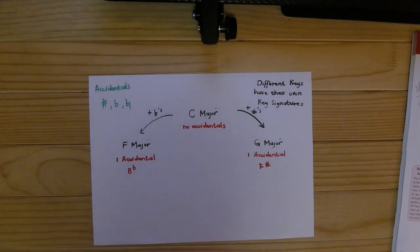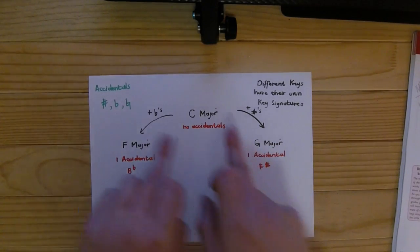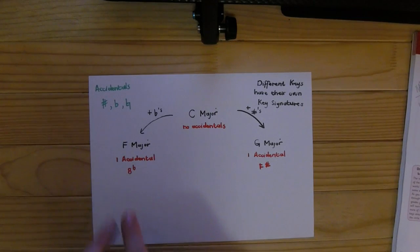If we go to G major, we find one accidental: F sharp. If we go to F major: one accidental, B flat. The Circle of Fifths, in fact, is not something new. We've already done key signatures and keys like C major, F major, and G major, and learned that there are sharps and flats.